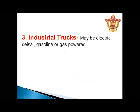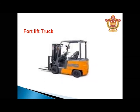Industrial trucks can be electric, diesel, gasoline, or gas powered. For example, the forklift truck — these trucks have forks that can fit under a pallet or box, lift it, and move or drag it from one place to another.